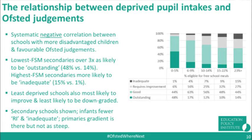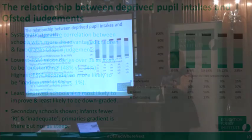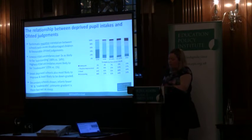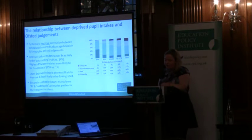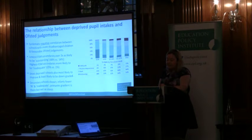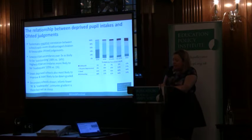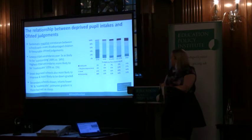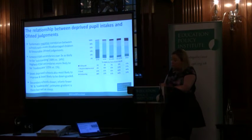Schools with the highest FSM rates were also more likely to be rated inadequate than those with the lowest rates — 15% compared with 1% for the extreme groups. We also found that the least deprived schools were most likely to improve between inspections and the least likely to be downgraded. For infant schools, there are many fewer requires improvement and inadequate schools across the board, and for primaries the gradient is not as steep, but it is present.